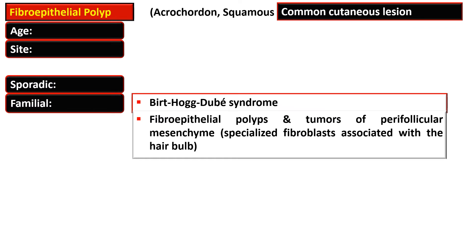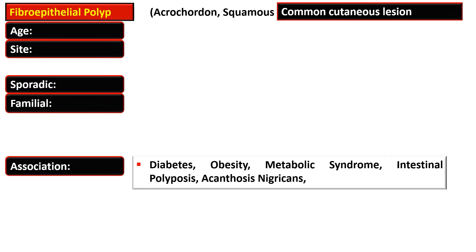They are sporadic or can be familial. Familial cases are associated with Birt-Hogg-Dubé syndrome. There are fibroepithelial polyps and tumors of the perifollicular mesenchyme — specialized fibroblasts associated with the hair bulb.